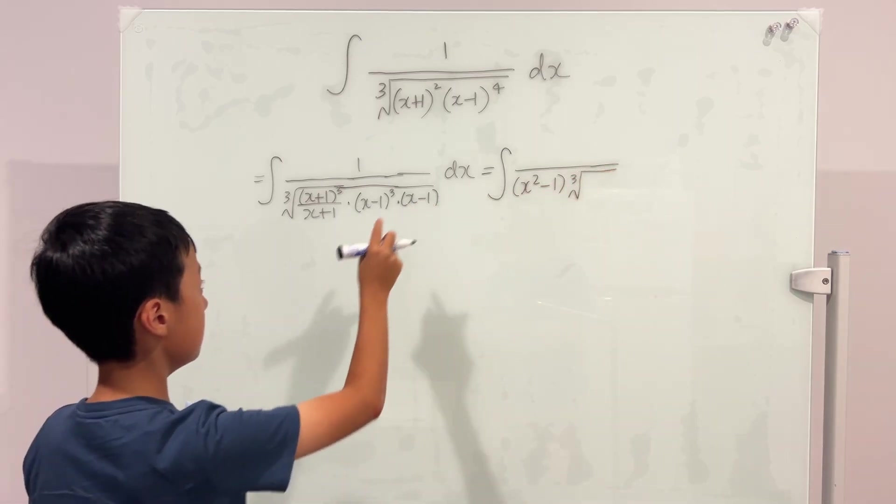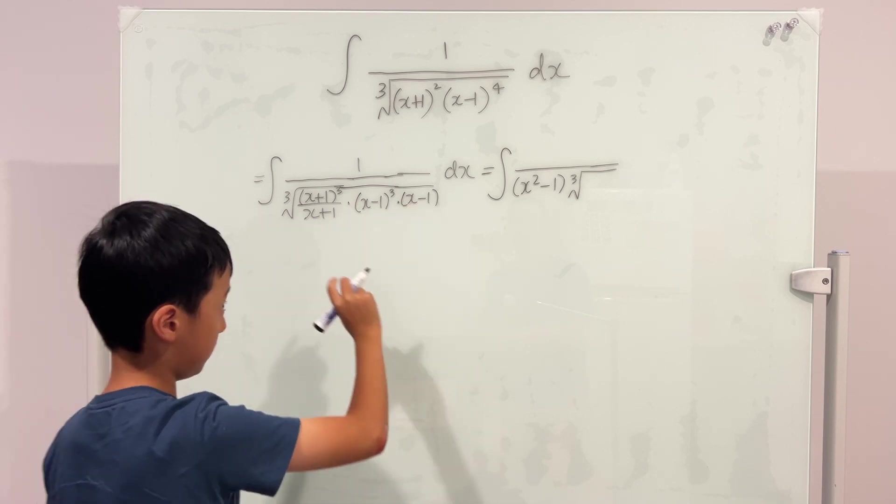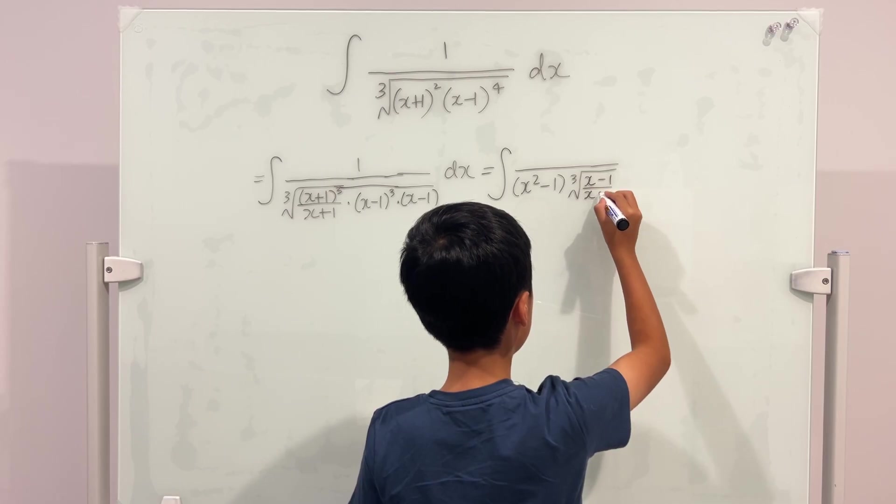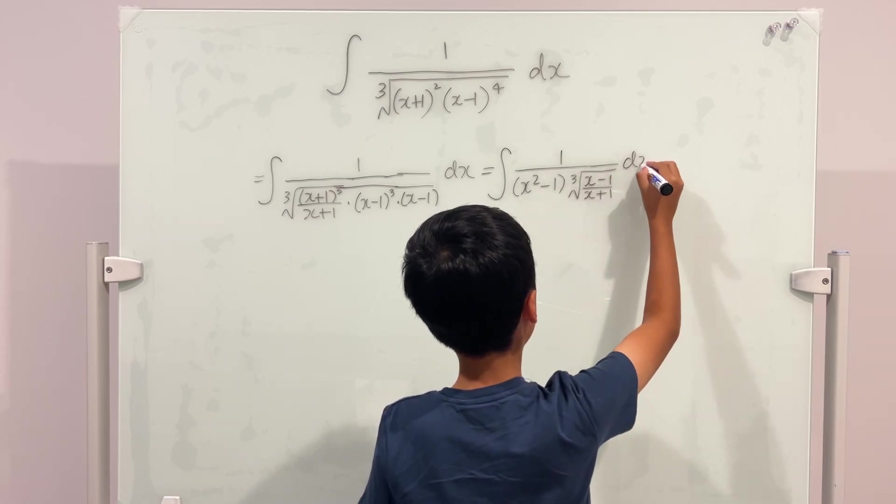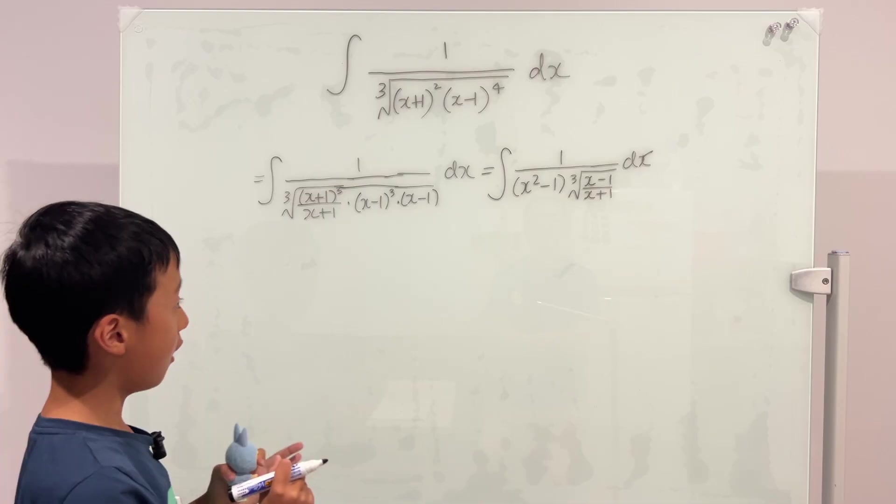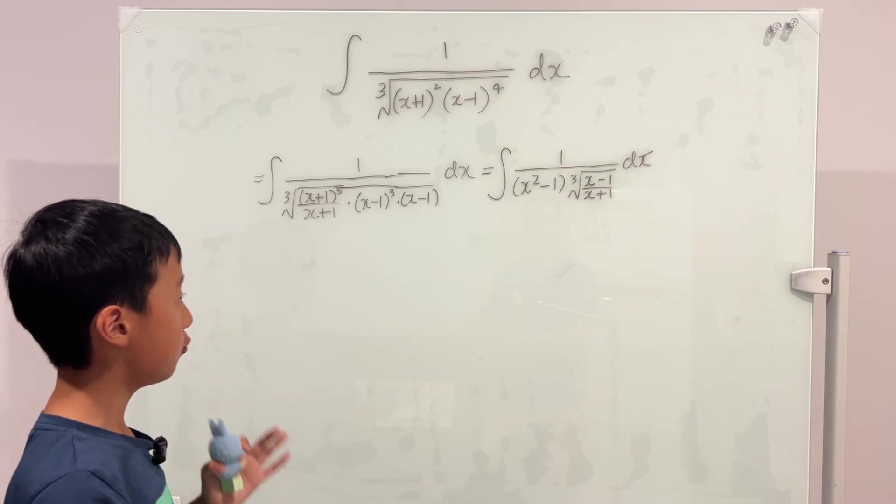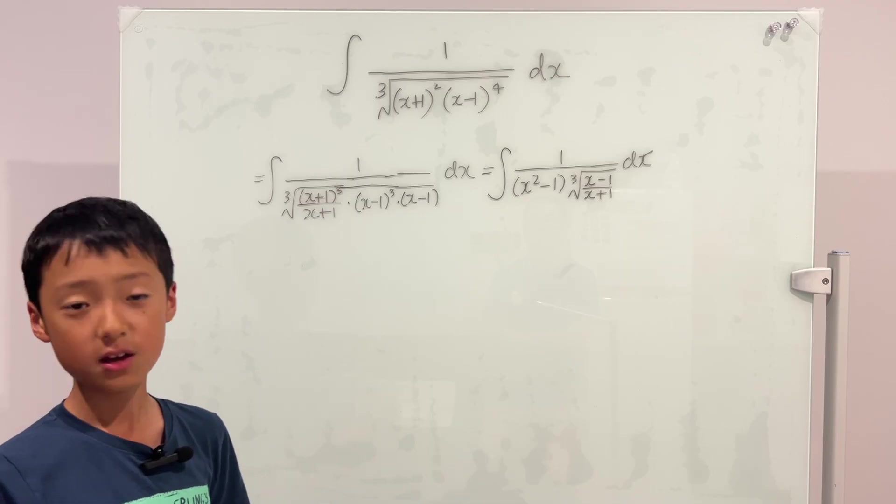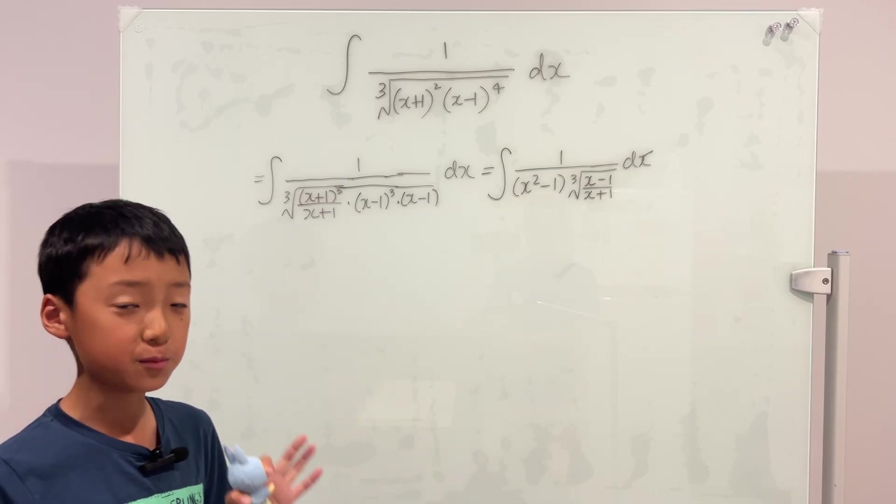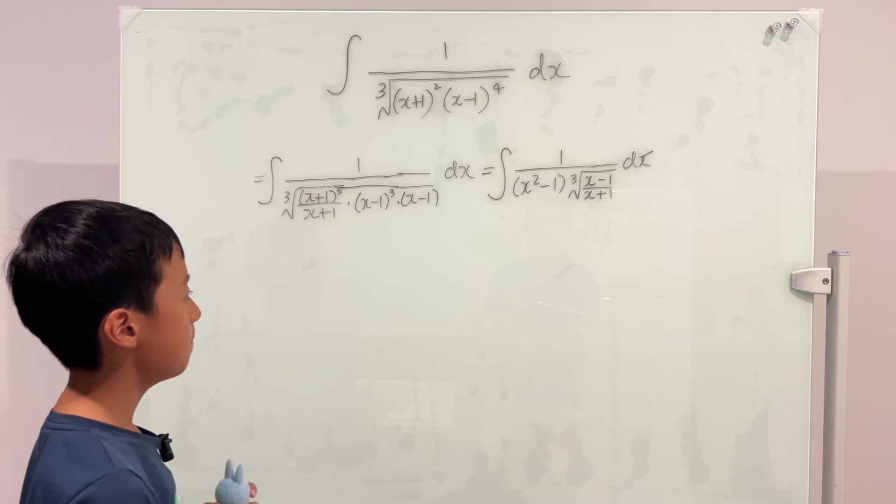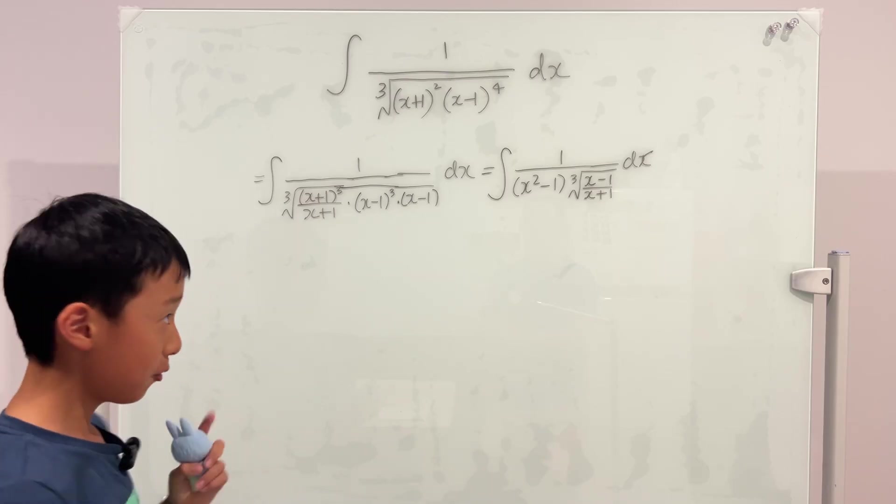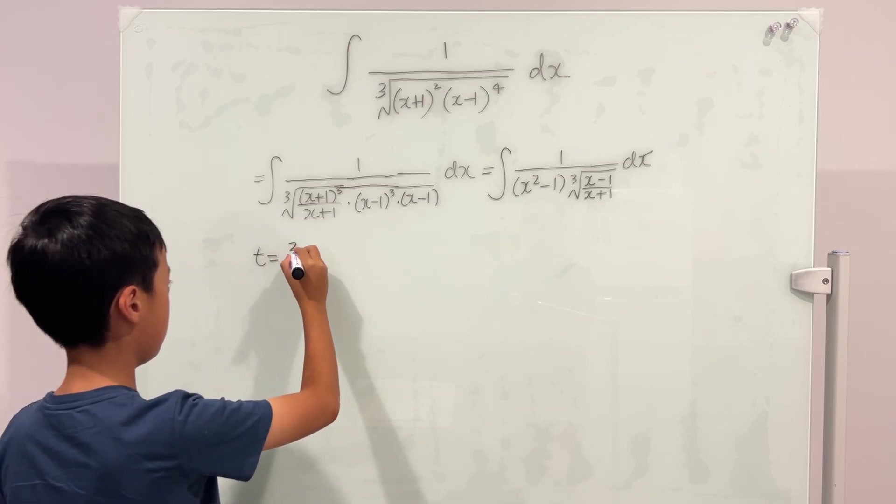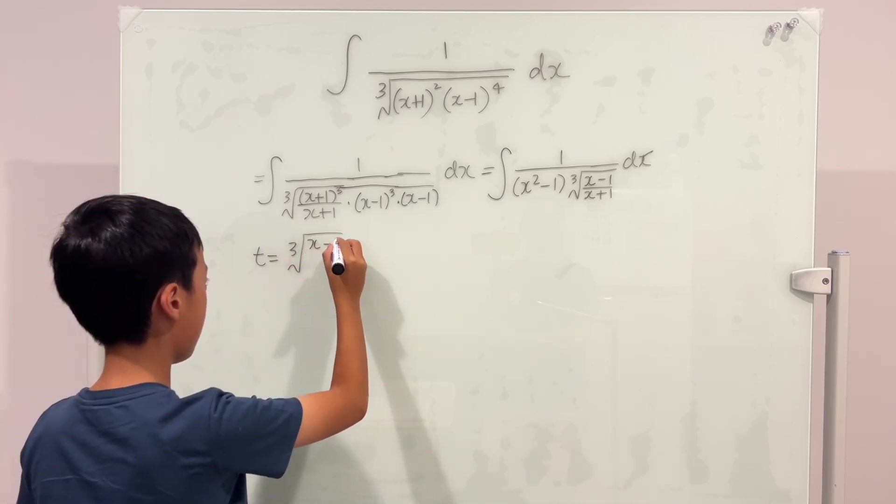And then the inside would be x minus 1 over x plus 1. Now we're going to do a super weird t sub, and I'm not talking about Weierstrass formula, I'm just talking about u-sub but I'm using t. I'm going to let t be equal to cube root of x minus 1 over x plus 1.